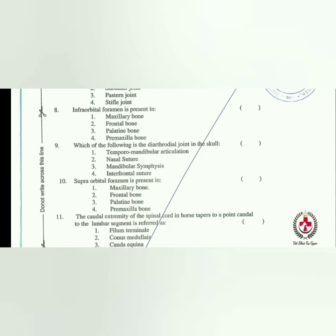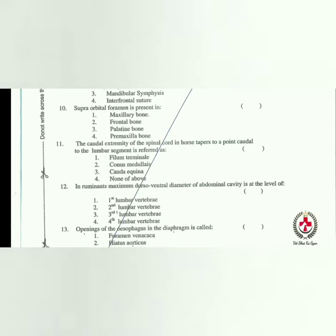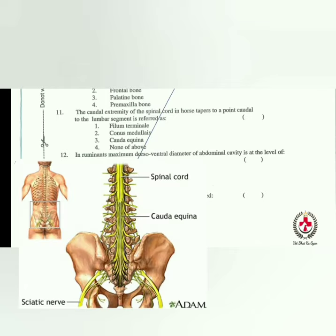The supra-orbital foramen is present in the frontal bone — remember this. The caudal extremity of the spinal cord in horse tapers to a point; the cord to the lumbar segment is referred to as the conus medullaris.